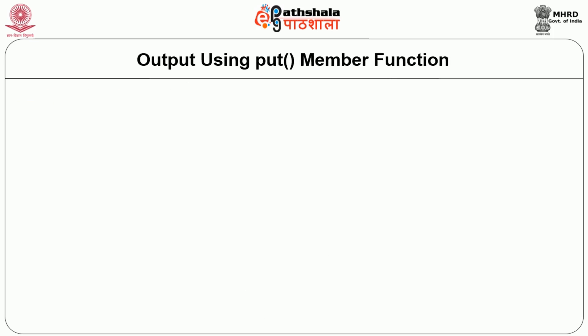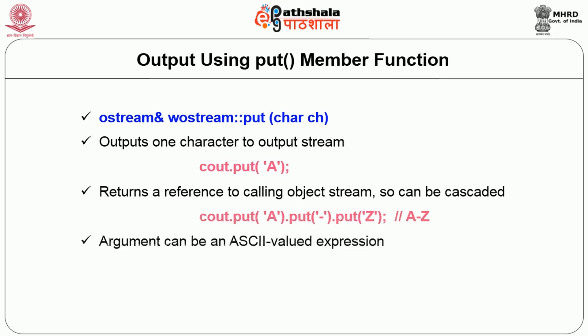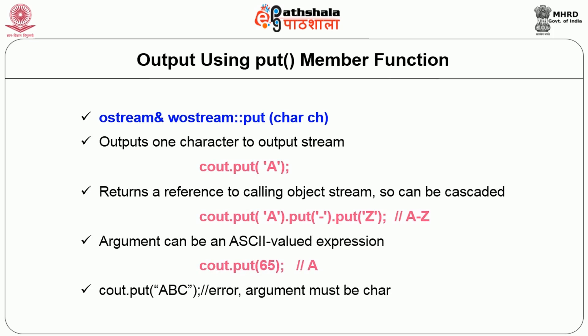Other than the insertion operator, we can use member functions like put, available in ostream or wostream classes. The put member function is used to output only one character. It returns a reference to the ostream, so it can be used in cascaded fashion. For example: cout.put('A').put('-').put('Z'). You cannot use strings as the argument. You can use the ASCII value directly — for example, cout.put(65) will display the capital letter 'A'.